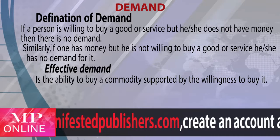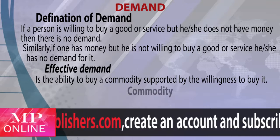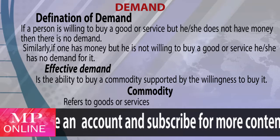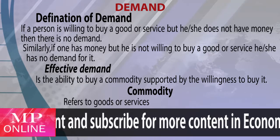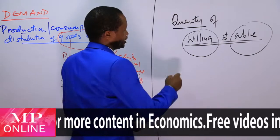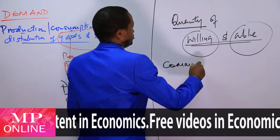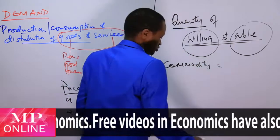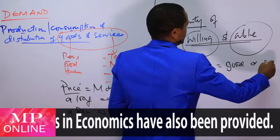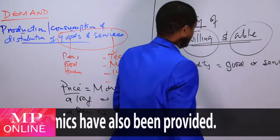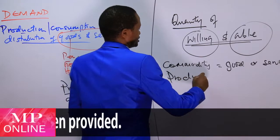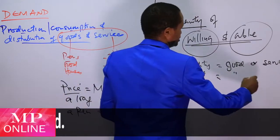It is also important to note that the term commodity refers to a good or a service. When we talk about the willingness of buyers to pay for a commodity, we are referring to a good or a service. Another term used interchangeably is product — a product also refers to a good or a service.